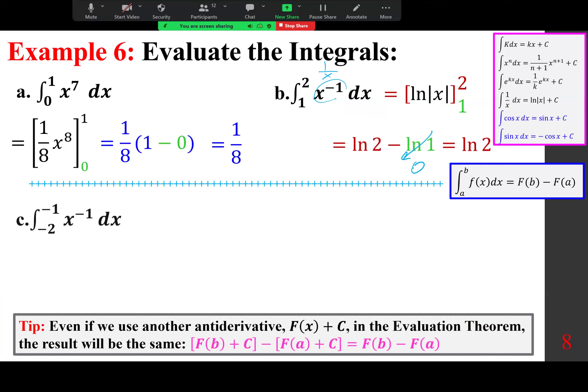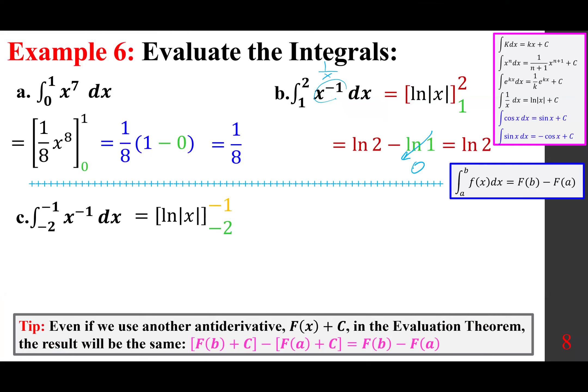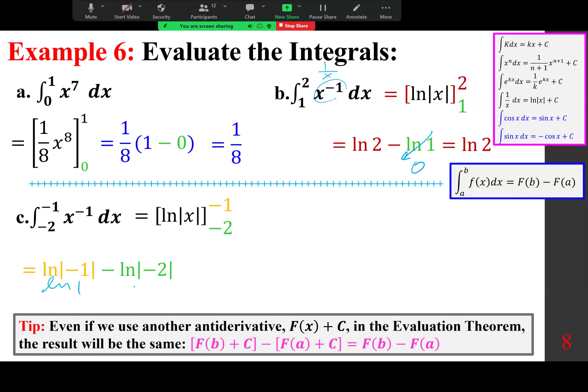For different limits that include negative values, keep the absolute value because ln of a negative number is undefined. In that case the result becomes ln|1| − ln|2| = 0 − ln 2 = −ln 2 as the exact answer.